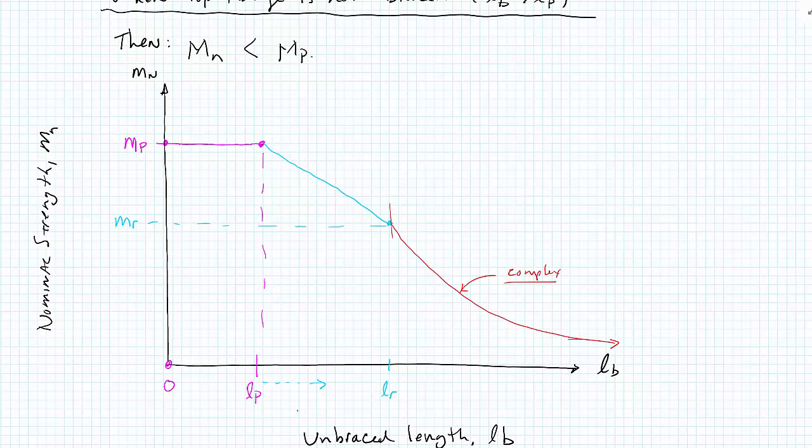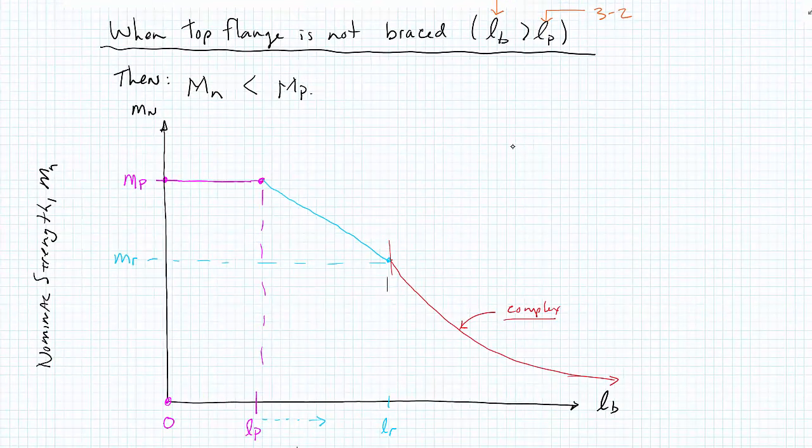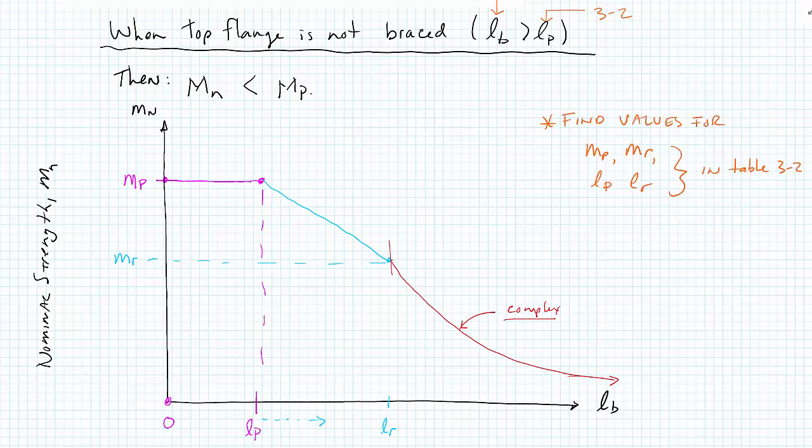In summary, when our distance between our brace points exceeds this value LP, we lose strength. The strength follows the curve shown. We can find the values for MP, MR, LP and LR in table 3-2. We can draw this graph. We can use an interpolation function to figure out if your LP is somewhere in the middle here. We can just graph it and figure out what our nominal capacity is.